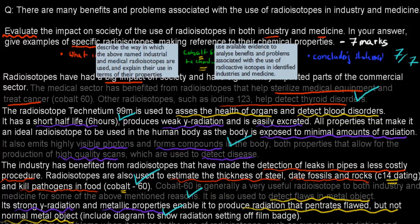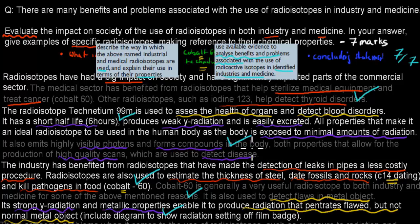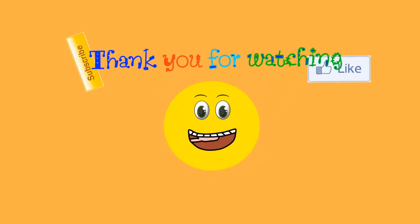Just to show where this question comes from — there were two dot points used to make it: describe the way in which industrial and medical radioisotopes are used and explain their uses in terms of properties; and use available evidence to analyze benefits and problems associated with the use of radioactive isotopes in identified industries and medicine. I hope that was useful. This kind of question is really big — seven marks, you need to write quite a bit, roughly 15 minutes to answer. Thank you for watching.